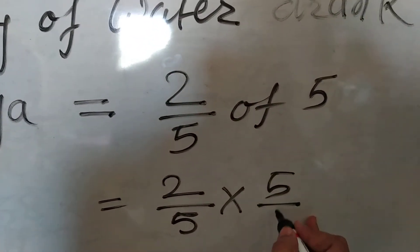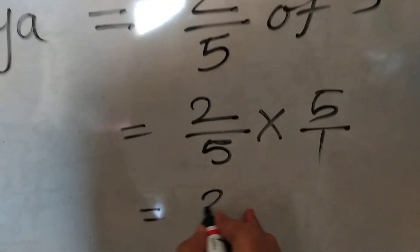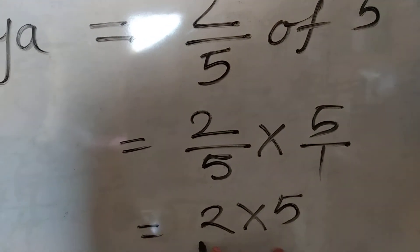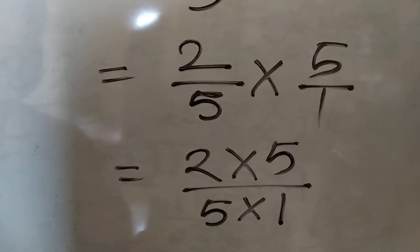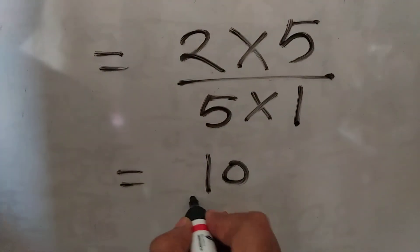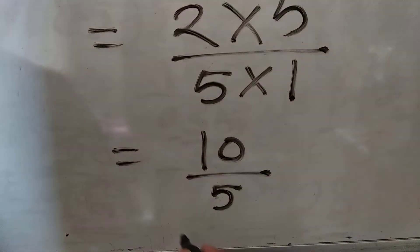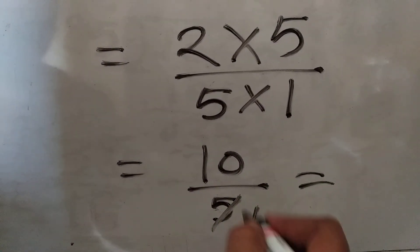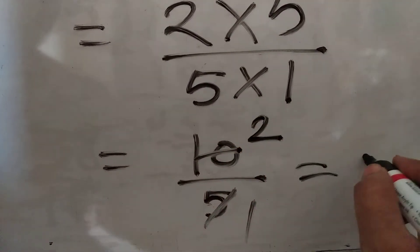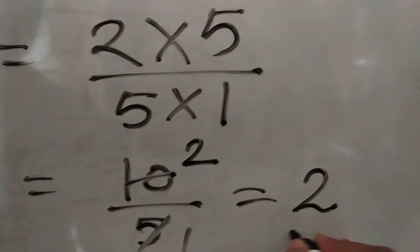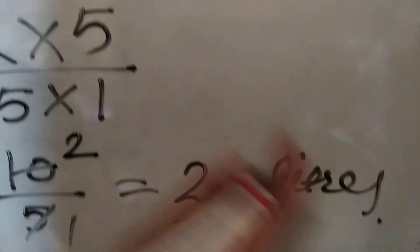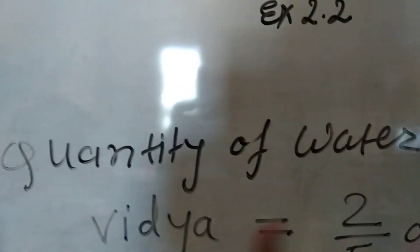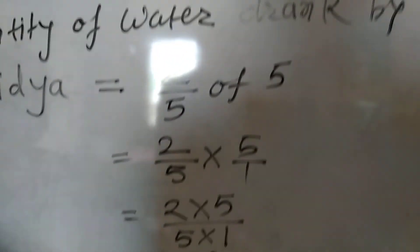We calculate 2 multiplied by 5 upon 5 multiplied by 1. 2 fives are 10 and 5 ones are 5. Divide 10 by 5: 5 twos are 10, so 2 came. The quantity of water drank by Vidya is 2 liters. This is the answer to the first sub-question.